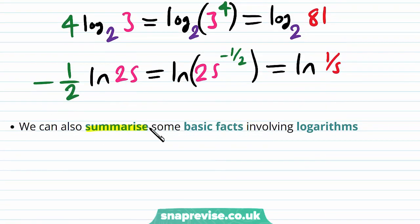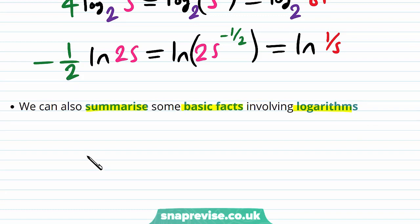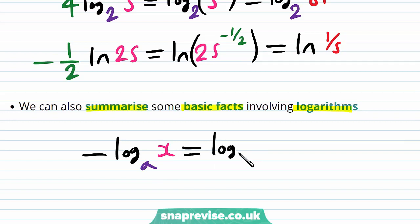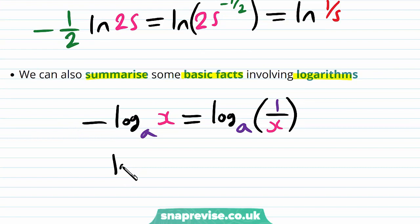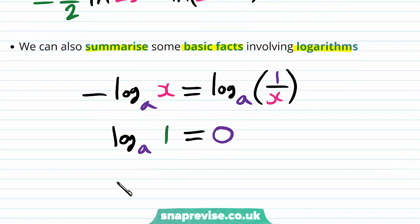We can also summarise some basic facts involving logarithms. Namely, if we have the minus log base a of x, using the power rule, this is the same as the log base a of 1 over x, because the minus outside is just the same as multiplying by minus 1, so you have an x to the power of minus 1 using the power rule. Similarly, the log base a of 1 is always 0, and the log base a of a is equal to 1.